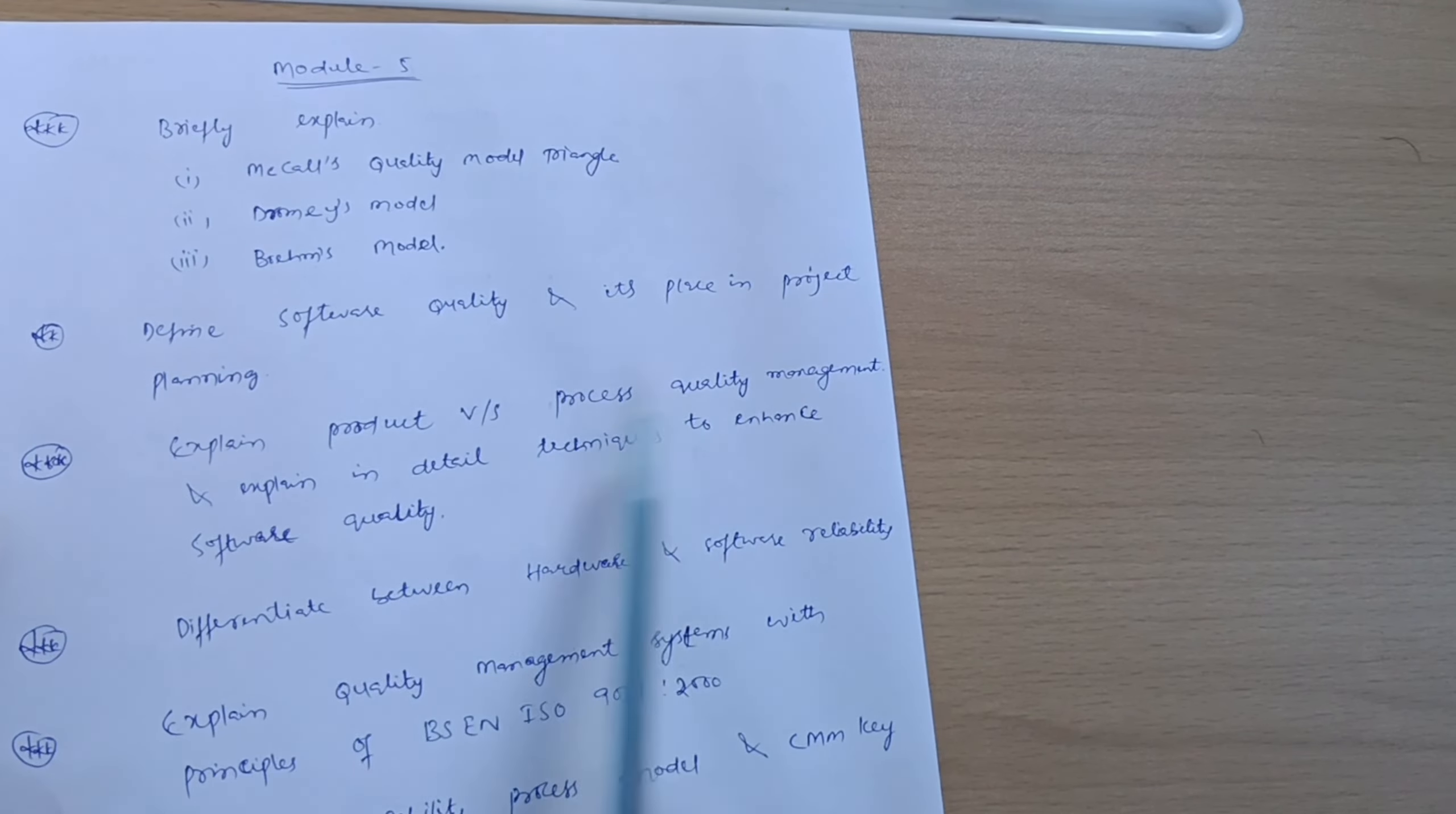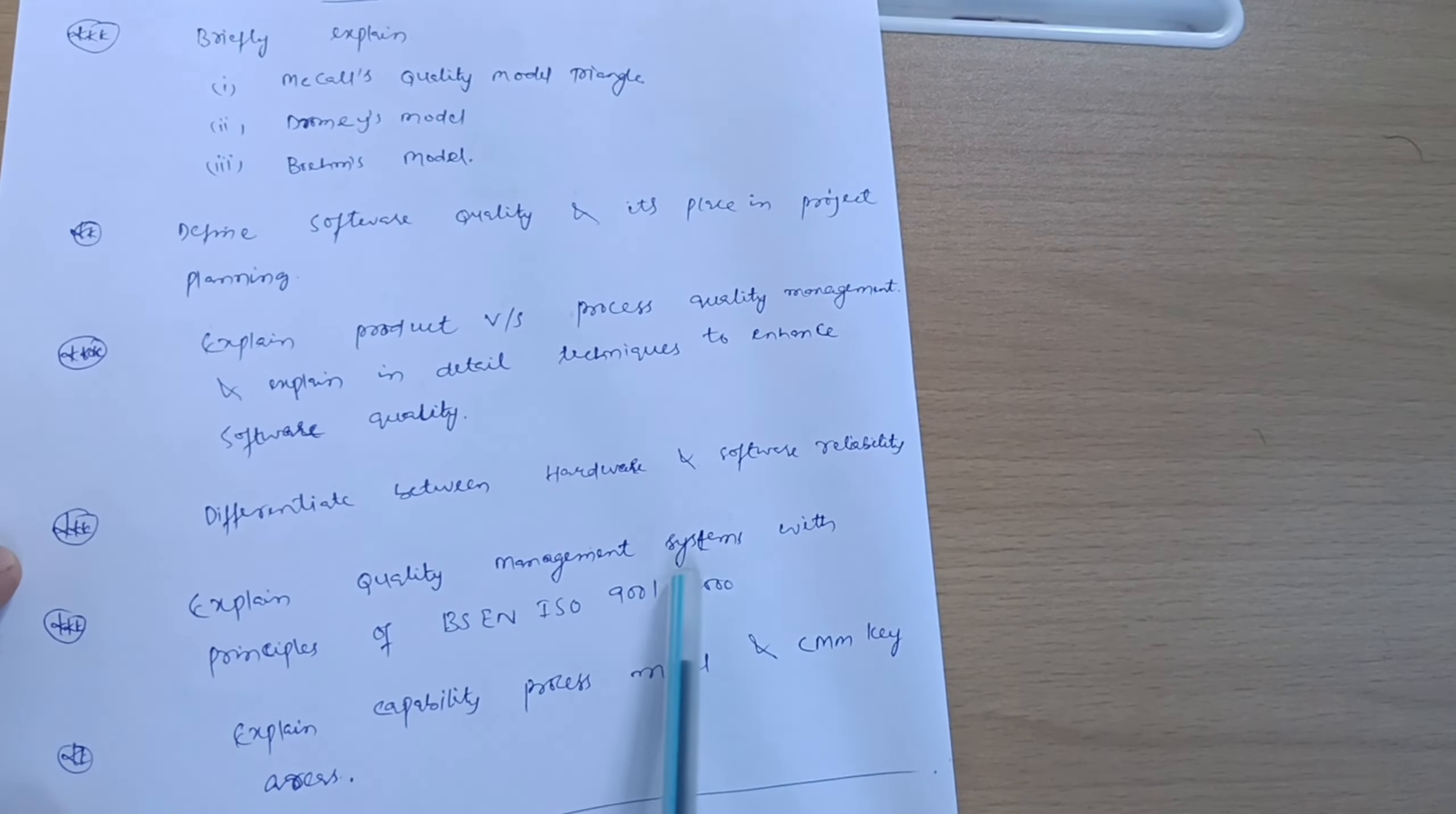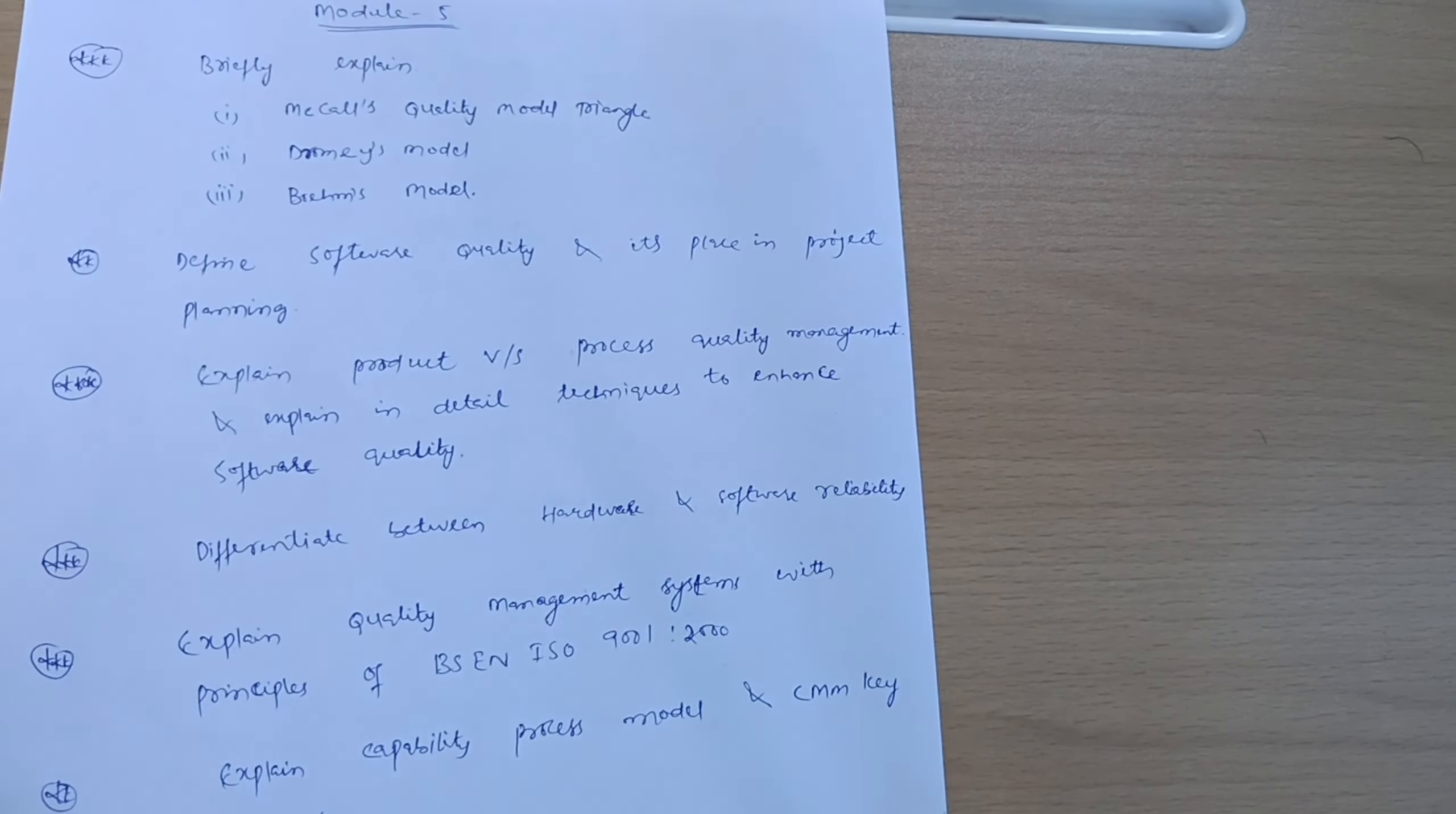Define software quality and its place in project planning. Explain project versus process quality management. Explain in detail techniques to enhance software quality. Differentiate between hardware and software reliability. Explain quality management systems with principles of BS EN ISO 9001-2000 standards. Explain Capability Maturity Model (CMM) and CMM key areas. These are the super important questions from Software Engineering and Project Management.